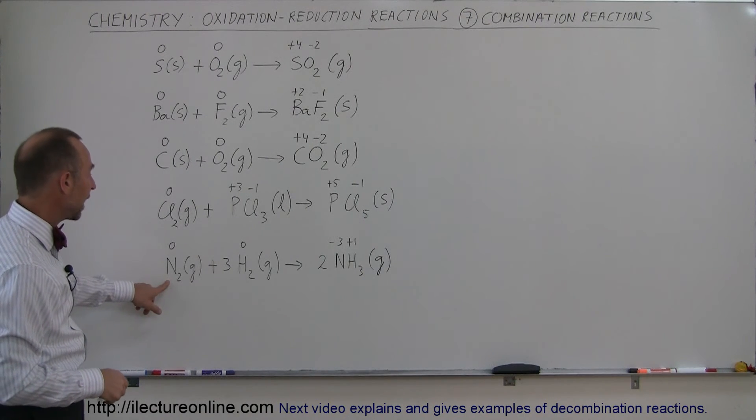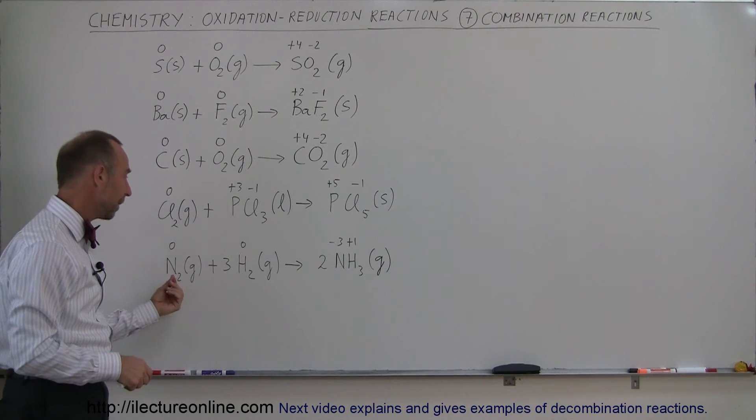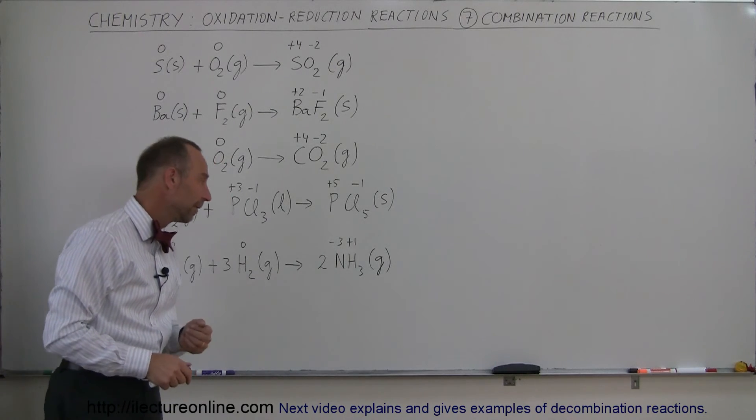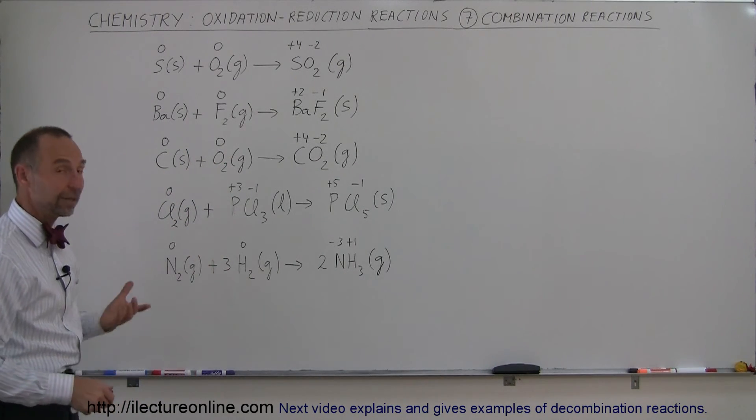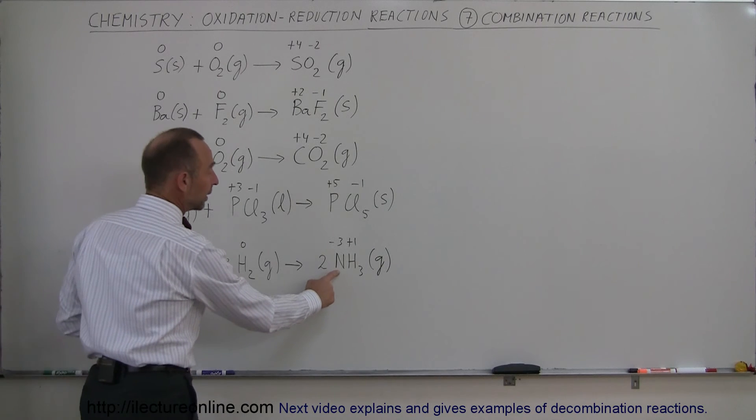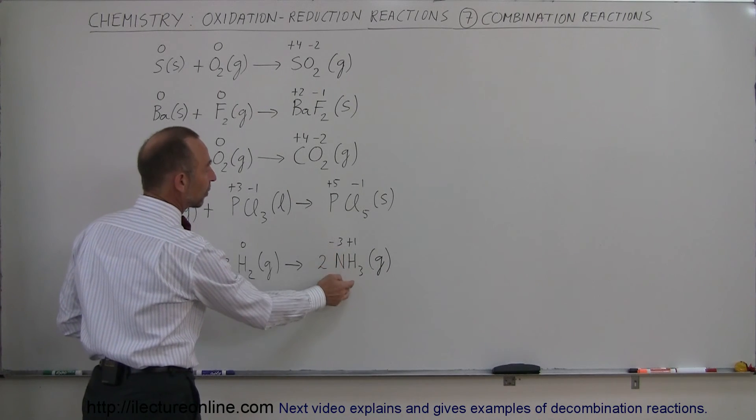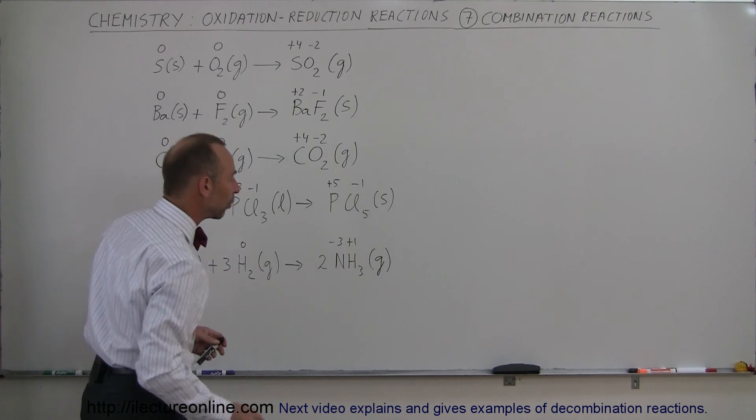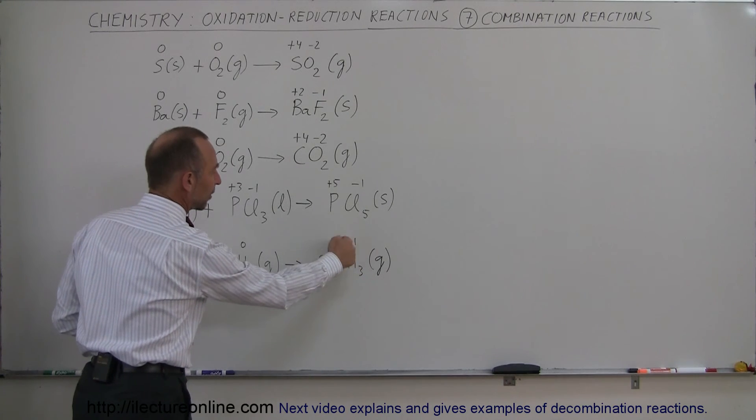And finally we have nitrogen gas and hydrogen gas. When they combine it forms ammonia gas. Notice the oxidation number for both gases is zero in their natural state. They come together. Nitrogen is now being reduced to minus 3. Hydrogen is oxidized to plus 1. You have to have three of them to balance out the equation.